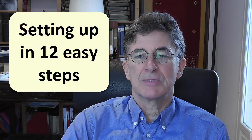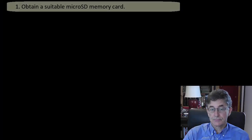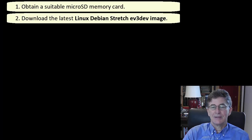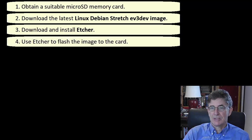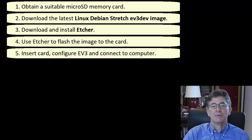Setting up in 12 easy steps — the total time could be less than one hour if all goes well. Obtain a suitable microSD memory card. Download the latest Linux Debian Stretch ev3dev image. Download and install Etcher, a free utility that will allow you to flash the EV3dev image to the microSD card. Use Etcher to flash the image to the card. Insert the card into the EV3. Boot the EV3. Do some minor configuring and establish a connection to the computer via USB, Wi-Fi, Bluetooth, or Ethernet.